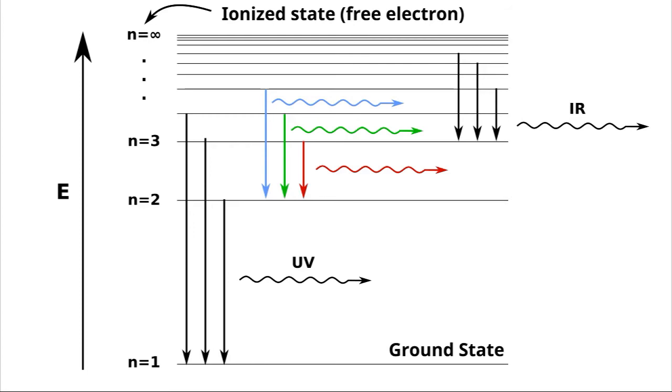But if we consider the transitions from these higher energy states down to the state where n equals 2, then the first handful of these, the transition energies are small enough that the energy from the light falls in the visible spectrum. And so, we'll get some different colors of light.